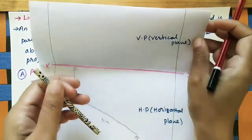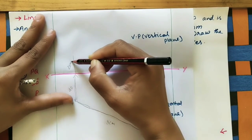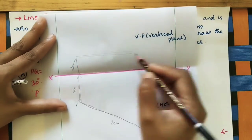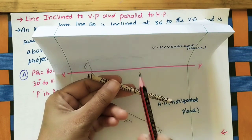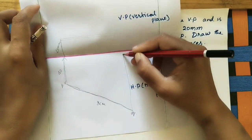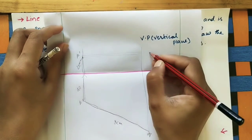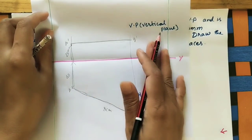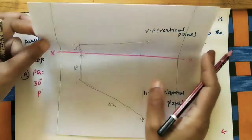We convert the 3D view to a 2D view by tilting the horizontal plane downward. At 20 mm gap we see the horizontal image in the front view. To find the length, draw vertical projector lines from the top view. Mark p-dash and q-dash at 20 mm. This gives the front view, and together with the top view these are the orthographic projections.